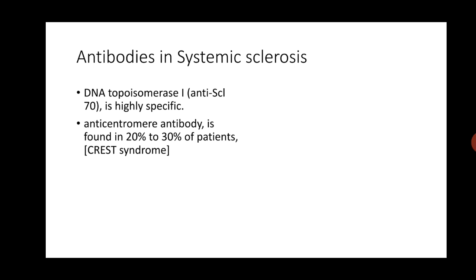Antibodies are also found in systemic sclerosis. Typically you find DNA topoisomerase 1 antibody, which is highly specific for the diagnosis of systemic sclerosis. Anti-centromere antibody is also found in 20 to 30 percent of patients with CREST syndrome. These are very typical multiple choice questions, so you need to remember them.